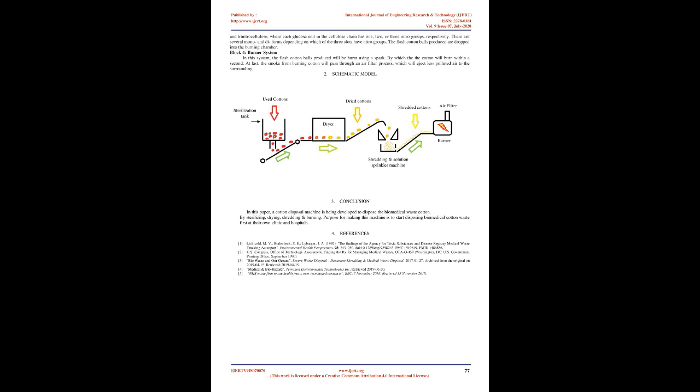The flash cotton balls produced are dropped into the burning chamber. Block 4, burner system. In this system, the flash cotton balls produced will be burnt using a spark, by which the cotton will burn within a second. At last, the smoke from burning cotton will pass through an air filter process, which will eject less polluted air to the surrounding.